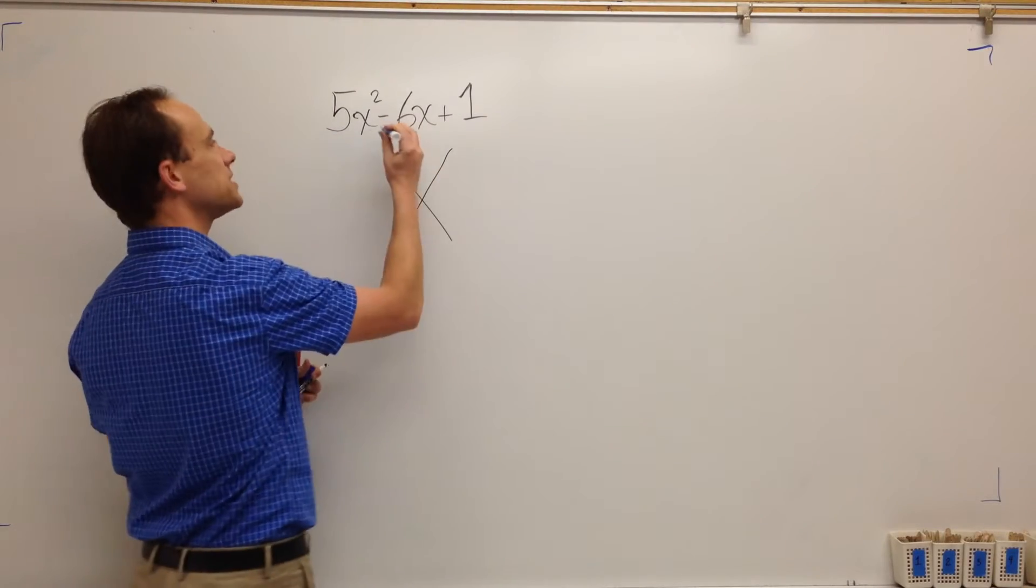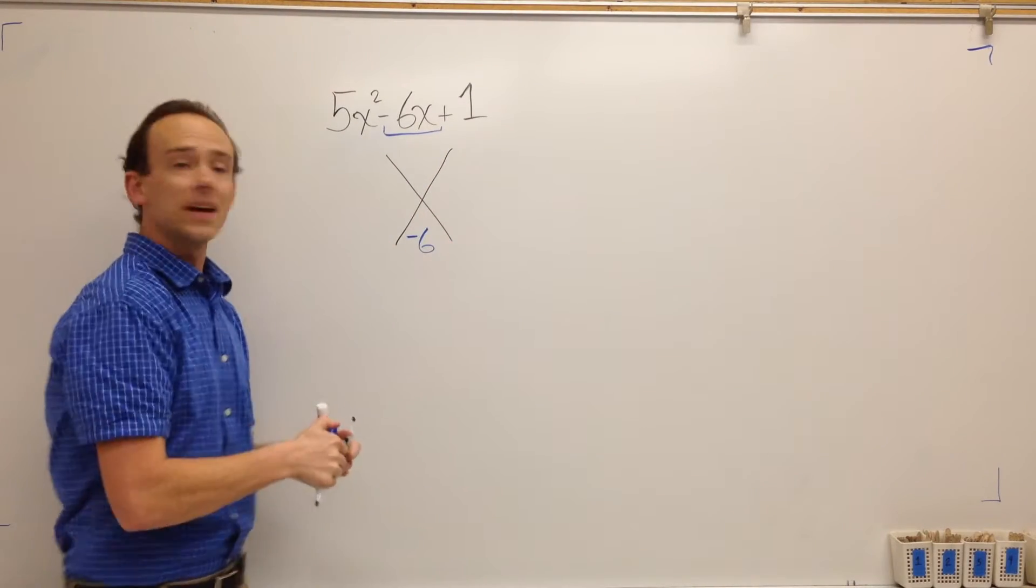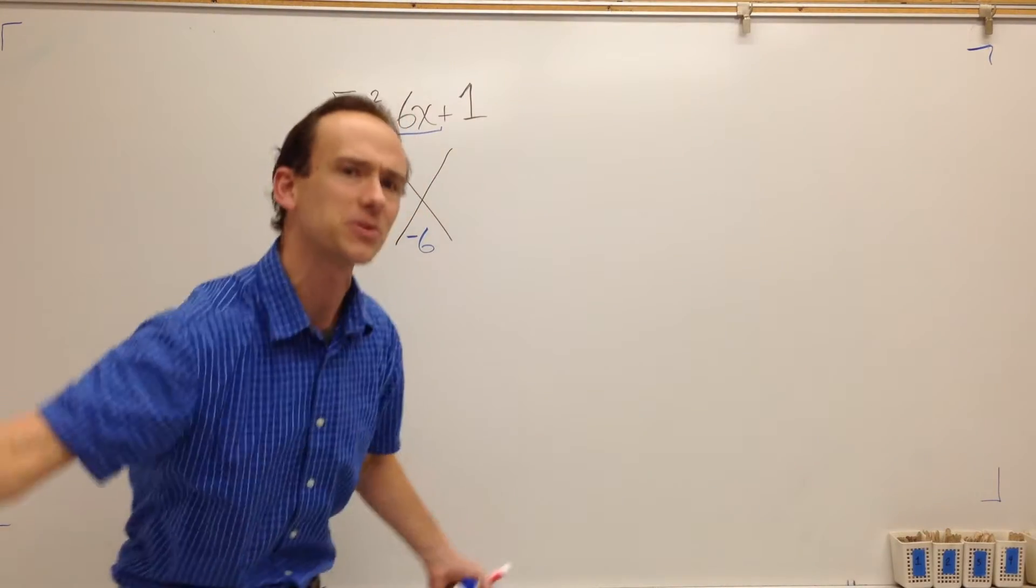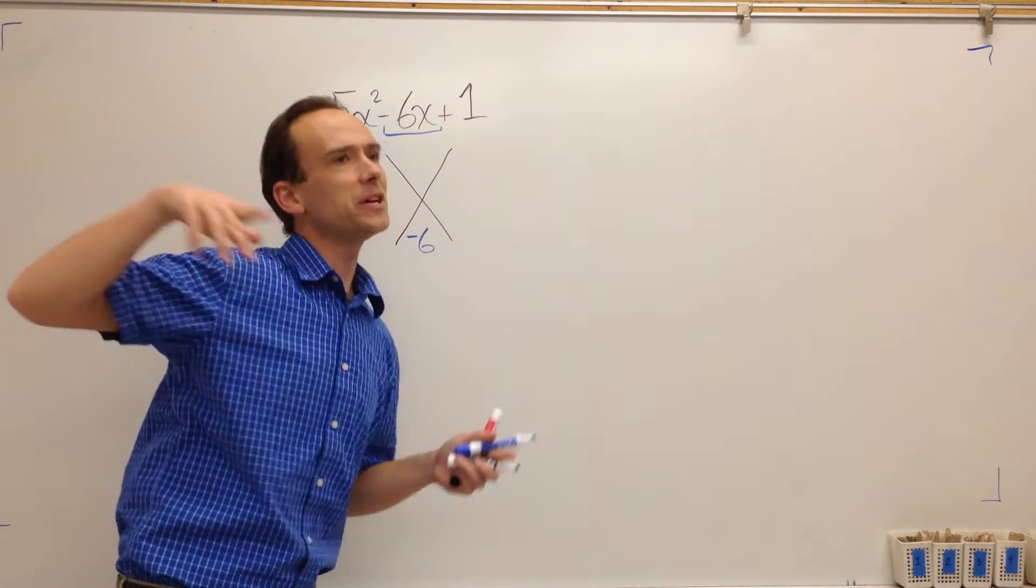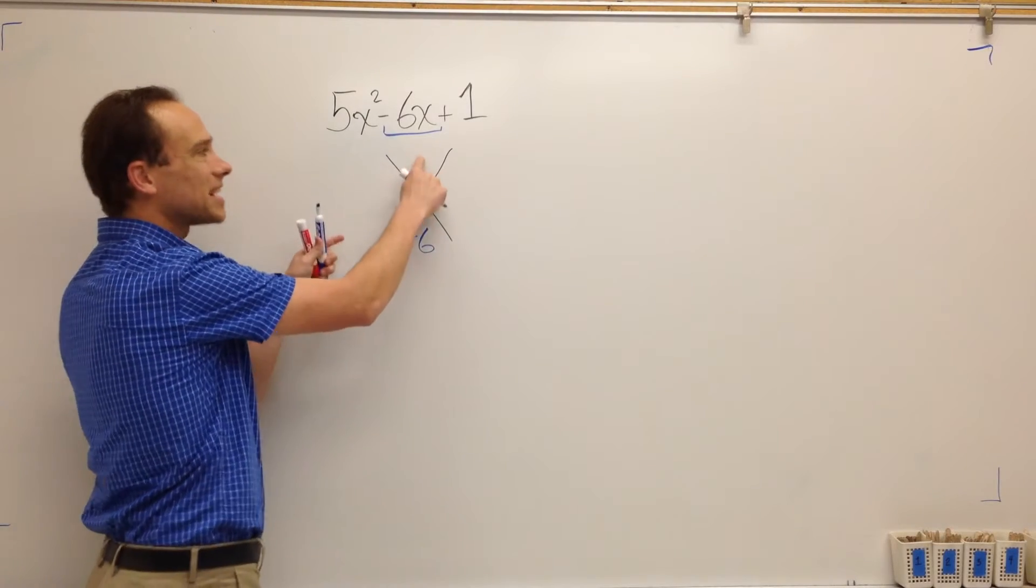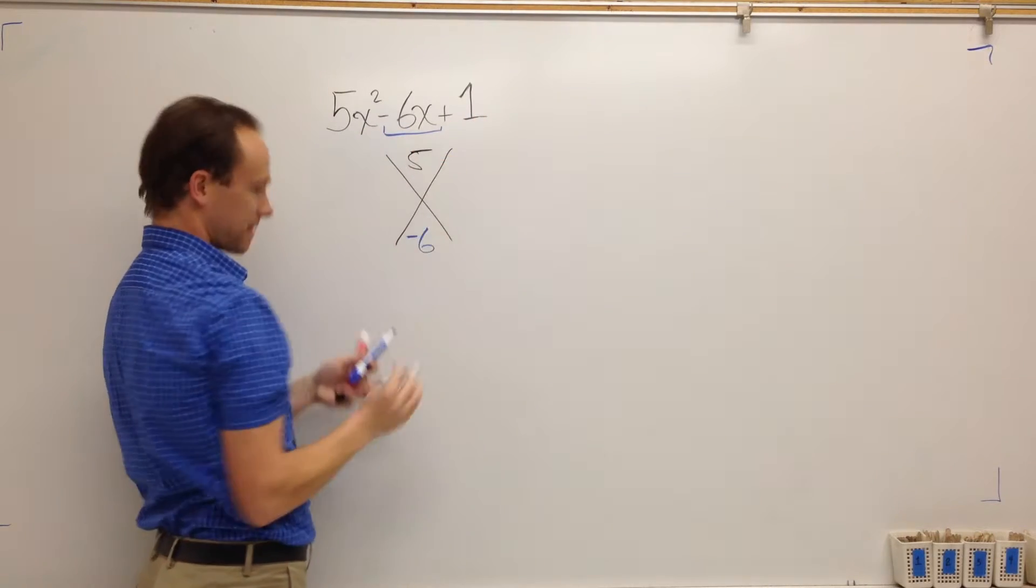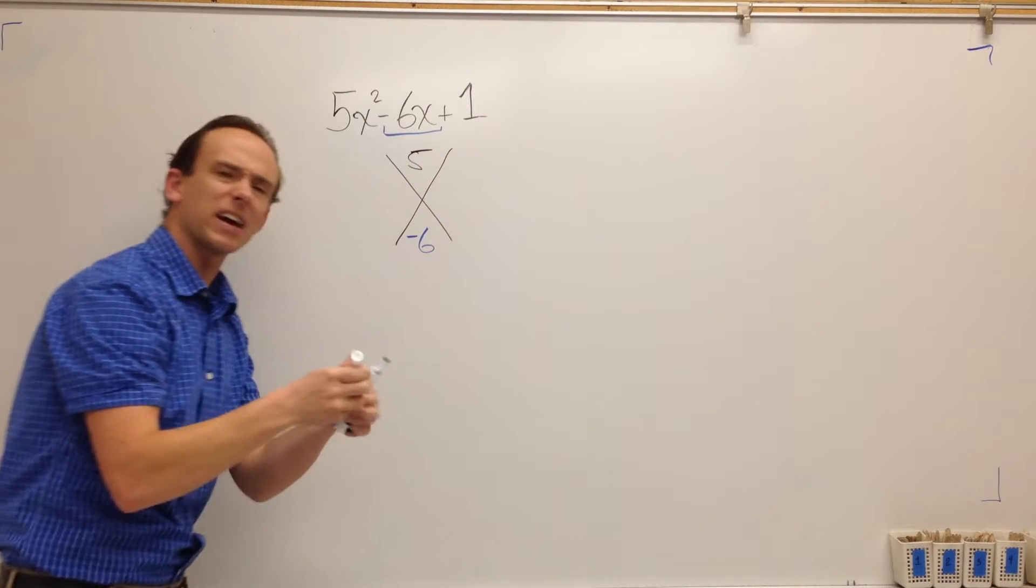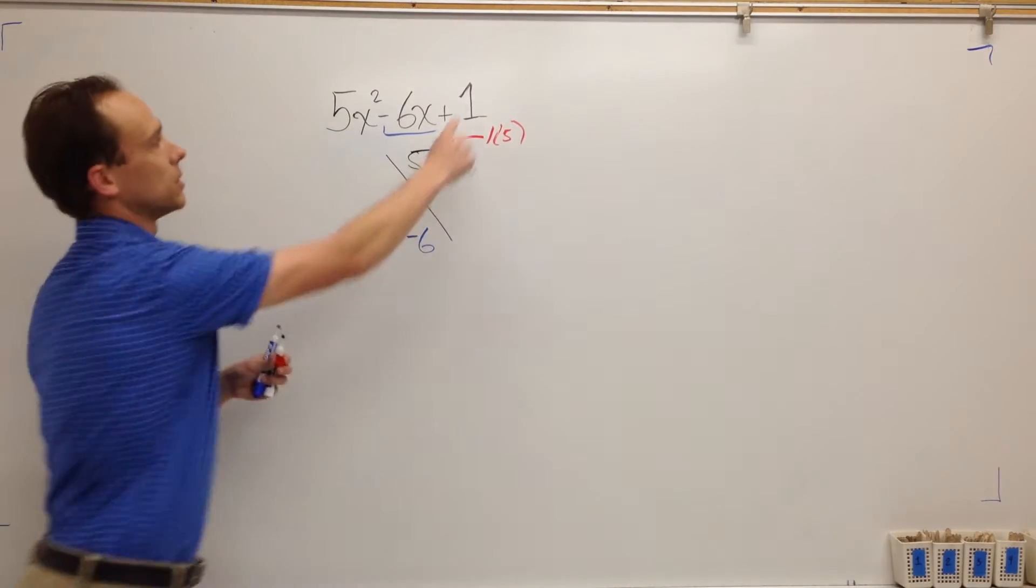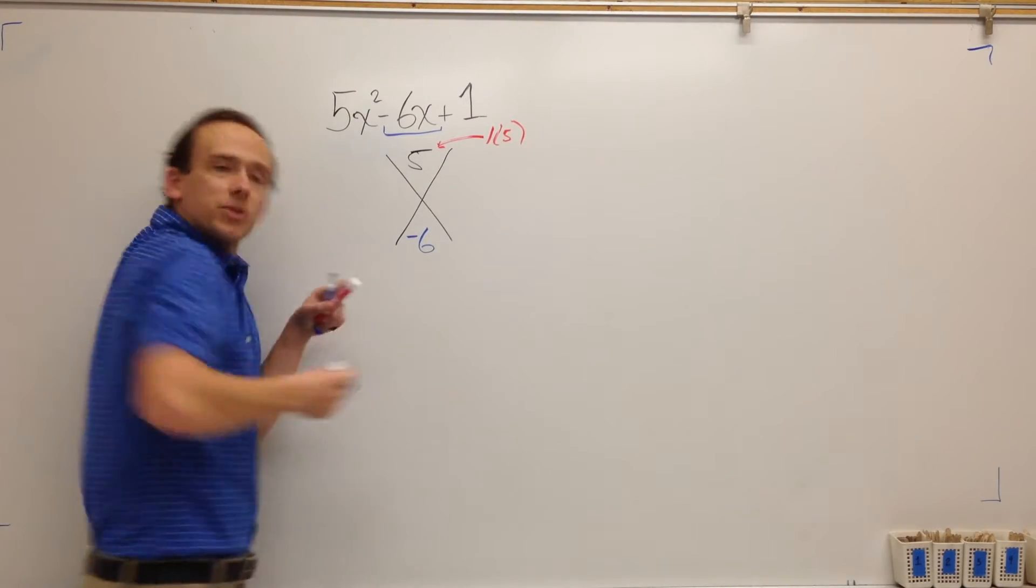It's called split the middle. This is the middle term right here. That's the one we want to split. Now, you could split negative six in a bunch of different ways. It could be negative seven plus one. It could be negative three minus three. There's a lot of ways you could split negative six. So we're constrained that this top number has to be whatever this is times that. So one times five is five. That goes here. I'll put that here in red. I got three colors for you today. That five is the one times five.